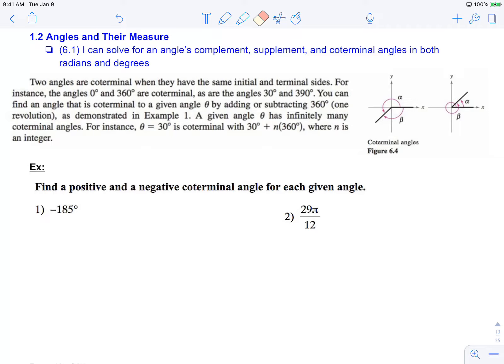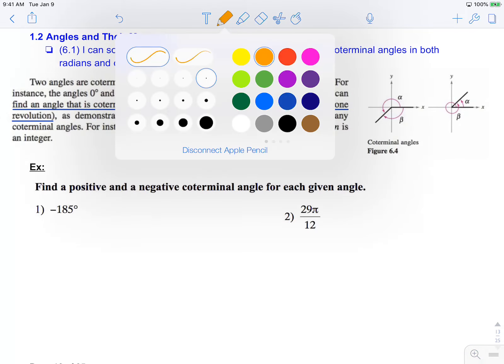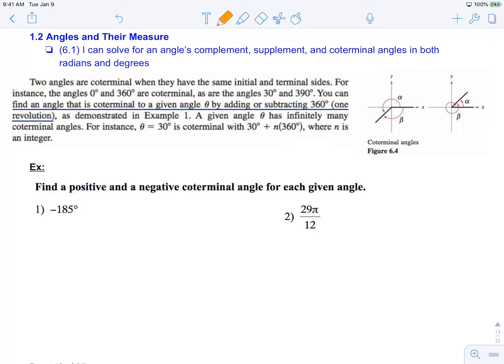As are the angles 30 degrees and 390 degrees. You can find an angle that is coterminal to a given angle theta by adding or subtracting 360 degrees, which visually is the same as doing one revolution around. And since you can revolve around an infinite amount of time, angle theta has infinitely many coterminal angles.